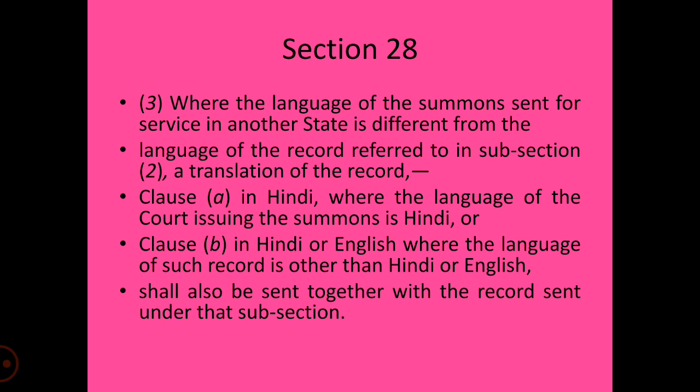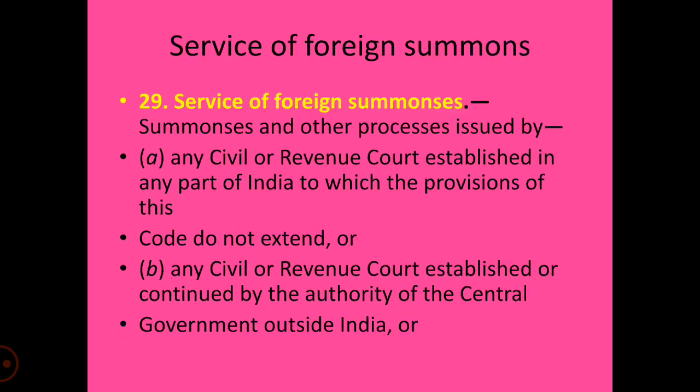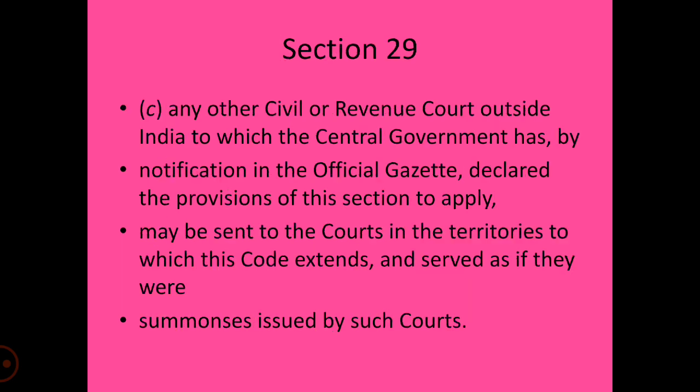Section 29 deals with the service of foreign summons. Clause A covers any civil or revenue court established in any part of India to which the provisions of this code do not extend. Clause B covers any civil or revenue court established or continued by the authority of the central government outside India. The CPC 1908 does not apply to such courts.